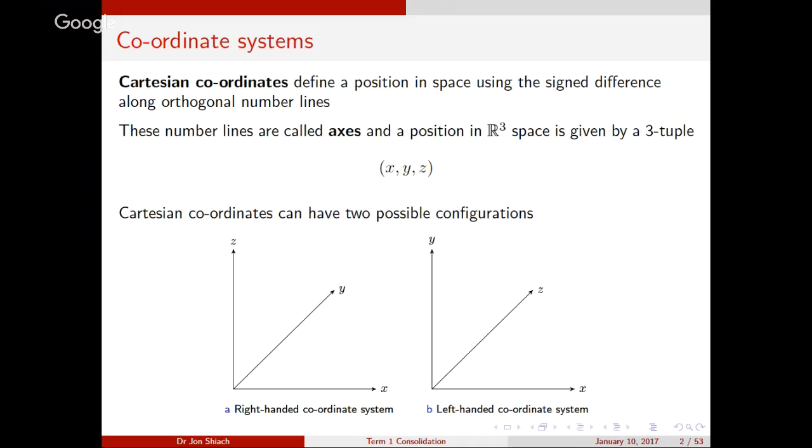Essentially what a coordinate is, is a definition of a position, which is a signed difference along an orthogonal number line. What does orthogonal mean? In terms of geometric speaking, what does orthogonal mean? If I had two orthogonal lines, what can you tell me about the angle between those two lines? 90 degrees. So orthogonal means 90 degrees. For example, you can see I've got an X and Z axis there, they're orthogonal.